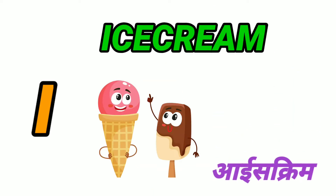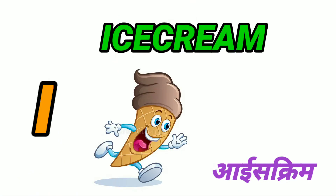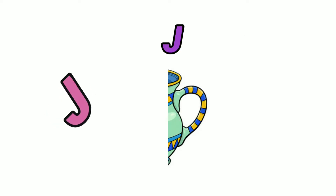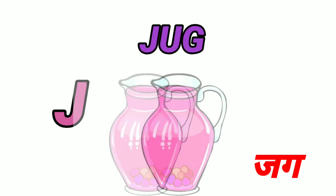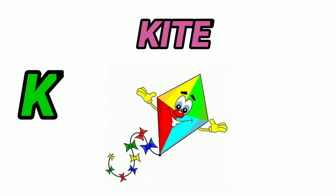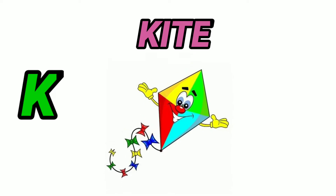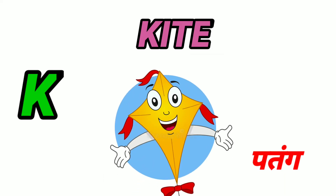I for Ice Cream. Ice Cream means Ice Cream. J for Jug. Jug means Jug. K for Kite. Kite means Patang.